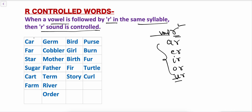Let's see some examples. 'Car' — before R the vowel A is there, so the R sound will be controlled. We pronounce it as 'car' — the R sound is not so dominant, it is controlled. Car, far, star, sugar, farm. These are A-R controlled words.